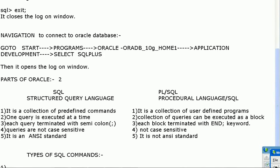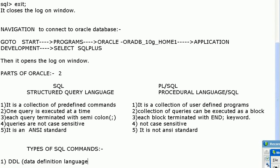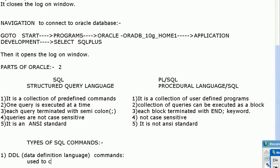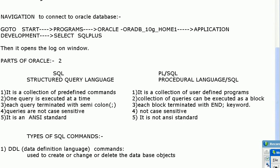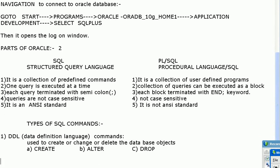The first type is DDL commands — Data Definition Language. The use of DDL commands is to create, change, or delete database objects. The commands we have are CREATE, ALTER, and DROP. We will discuss each command in detail.